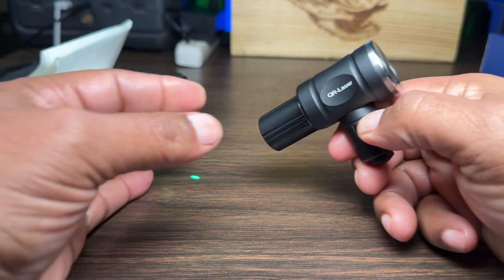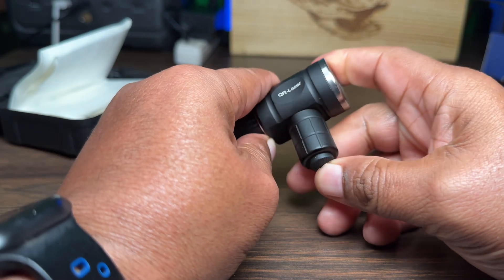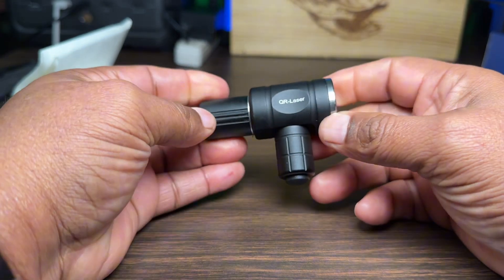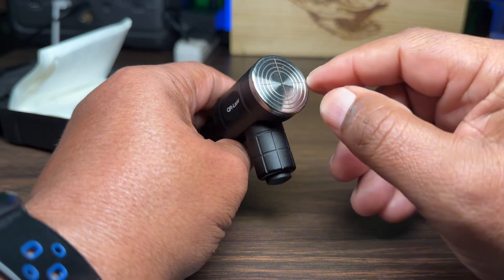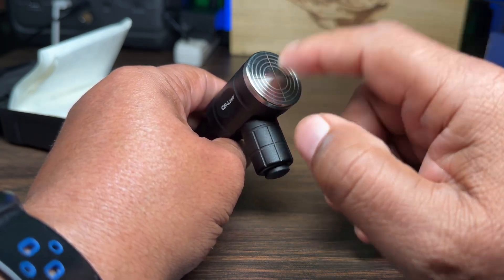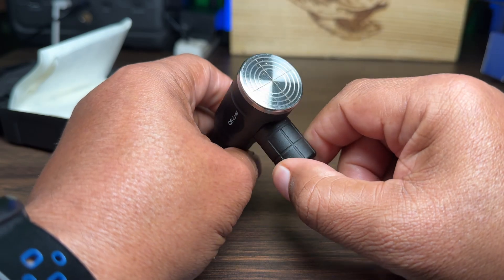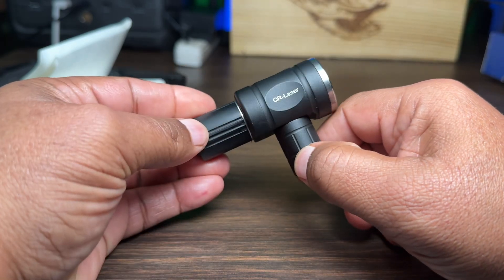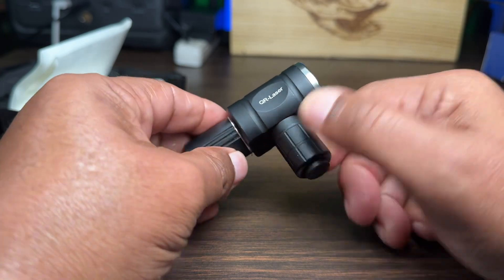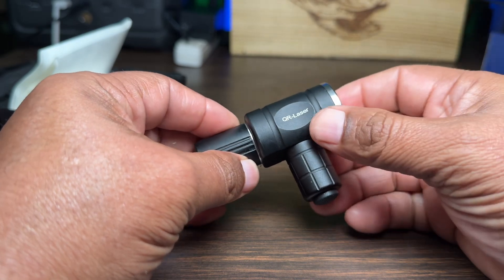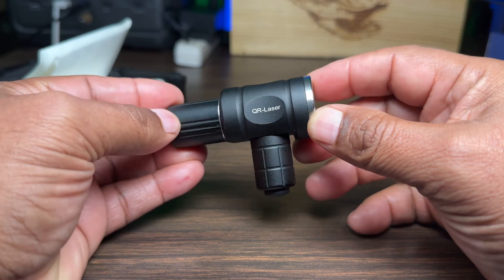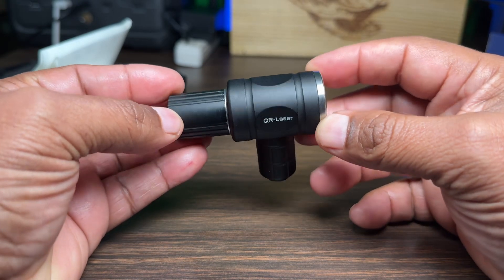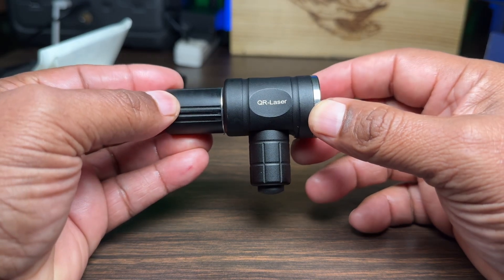Alright guys, if you're looking for a bore sighter that has some more unique modern features and doesn't have to go inside of a barrel, this could be very useful. It's very compact and easy to travel with. You could just keep this in your range bag, and whenever you need to sight something in, you have it ready to go for yourself, your family, friends, or whoever you want to help out. Definitely check this out.